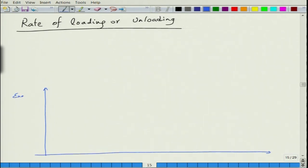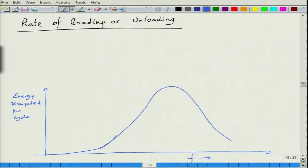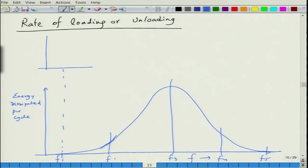When you plot energy dissipated per cycle as a function of frequency f, it has a bell-curve behavior. Taking different regimes — f1, f2, f3, f4, f5 — at very low frequency, when you strain the sample at very low frequency, the sample achieves the requisite strain in an isothermal manner because the sample has sufficient time to equilibrate with the surroundings. So you are achieving sigma_1 and E_i.